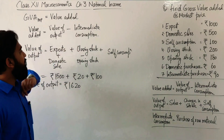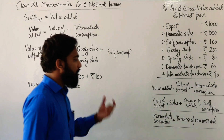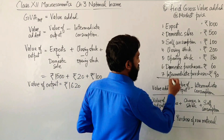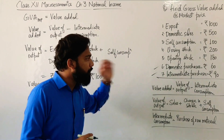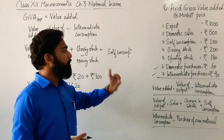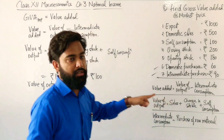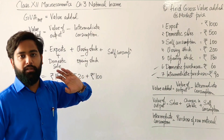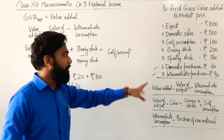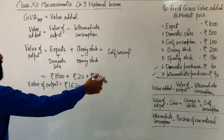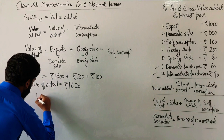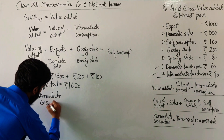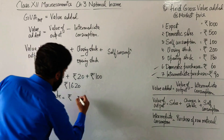Now let's calculate the intermediate consumption. Intermediate consumption means purchase of raw material. The purchases are given in two things: domestic purchases and intermediate purchases. What should be included? We should include only the intermediate purchases. Domestic purchases come under the intermediate purchases — domestic purchase is a part of intermediate purchase. So the value of intermediate consumption is rupees 90.